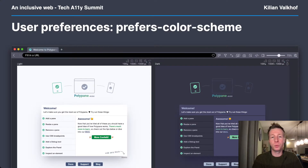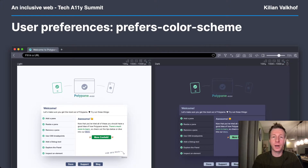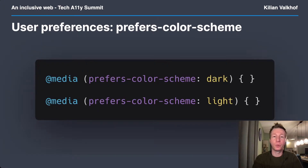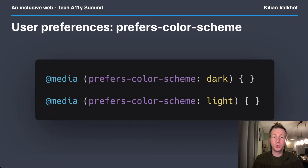With prefers-color-scheme, or as most of us call it, dark mode, a user indicates whether they prefer to see a light or dark version of your site. Users might prefer a dark version because it's easier on their eyes, or a light version because it usually has more contrast. Using the prefers-color-scheme media query, we can check for both dark and light. There used to be a no-preference option, but it got removed since it was essentially the same as light mode. Most of you will have a website in light mode. Adding a dark mode from scratch can be a big project. If you want to add dark mode but don't have a lot of time, you can use cheap dark mode.